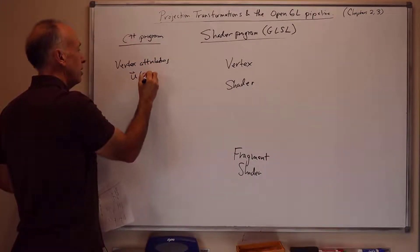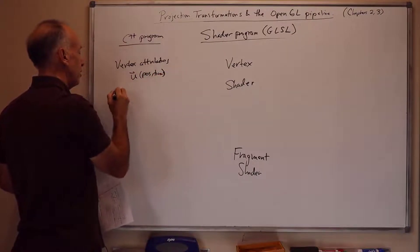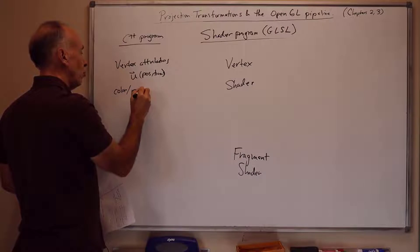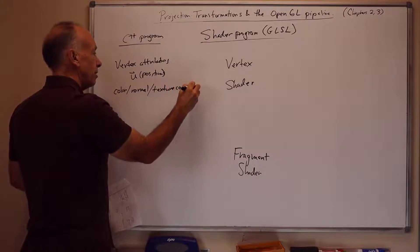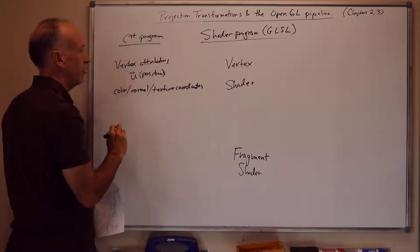First though, the C++ program sets up vertex attributes, such as u, which we're using for position. But there's other possible attributes as well. For instance, we've already been using color. There could be normals, which are normal vectors orthogonal to a surface being rendered. Or texture coordinates, which index into a texture. And we will talk more about normals and texture coordinates later in the course.